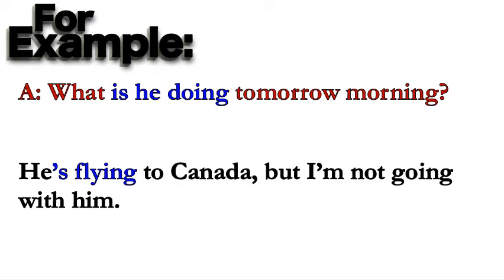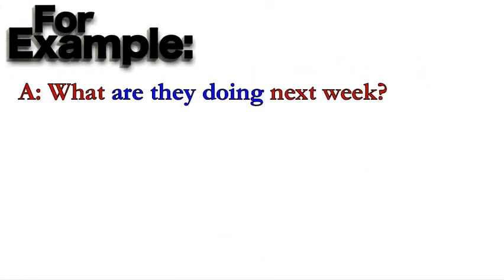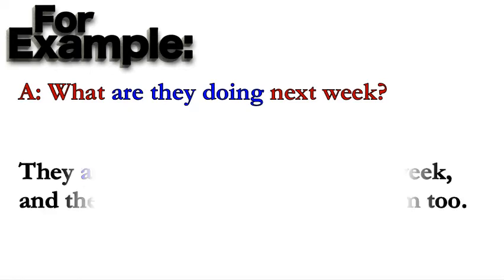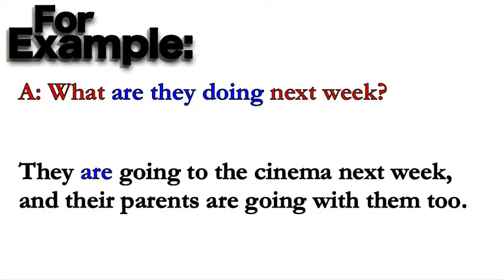Notice here, my dear students — he is flying: verb plus ing. These are arrangements in the future. Another example with plural pronouns: What are they doing next week? They are going to the cinema next week, and their parents are going with them too. This action is going to happen next week, so we used the present continuous for future arrangements.